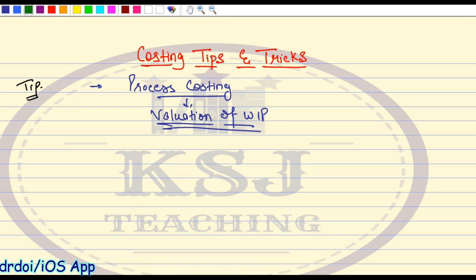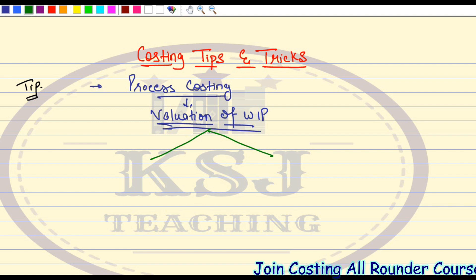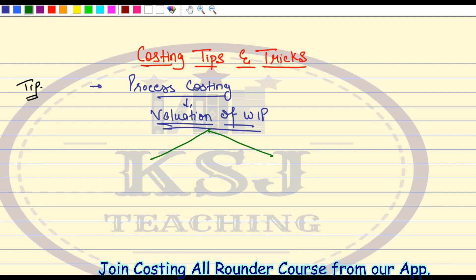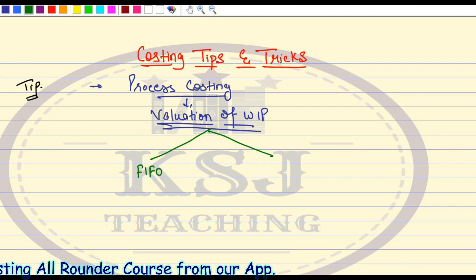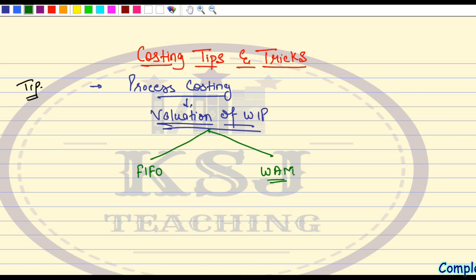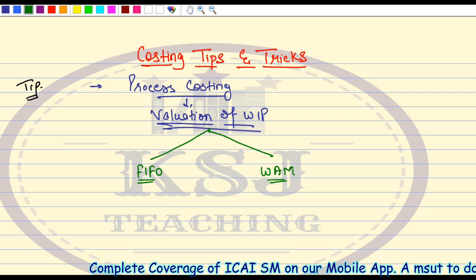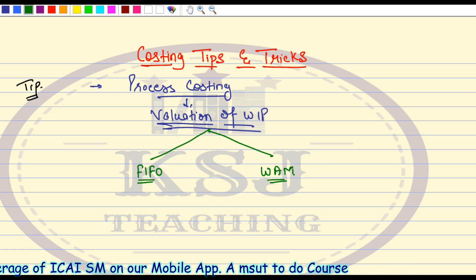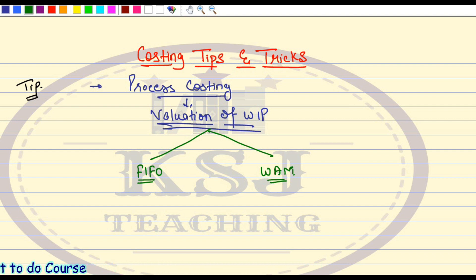In that, we have already studied that there are two methods by which we can value our closing WIP. One is the FIFO method and the other one is the Weighted Average Method — we call it WAM. The problem here is that sometimes in the exam, we get a question which can be solved by the FIFO method also and the Weighted Average Method also.